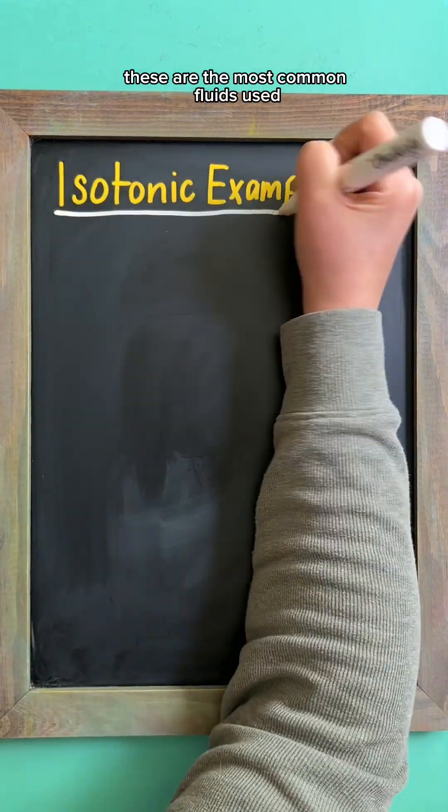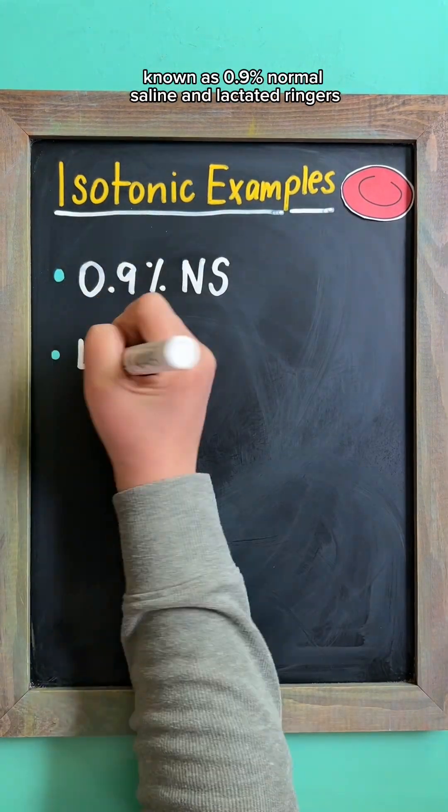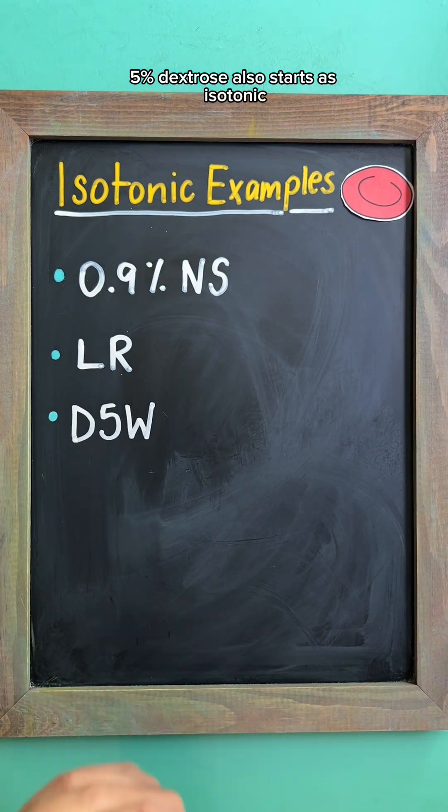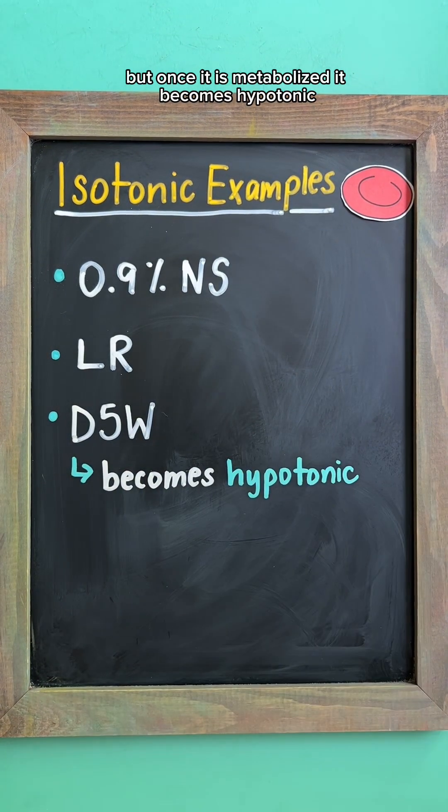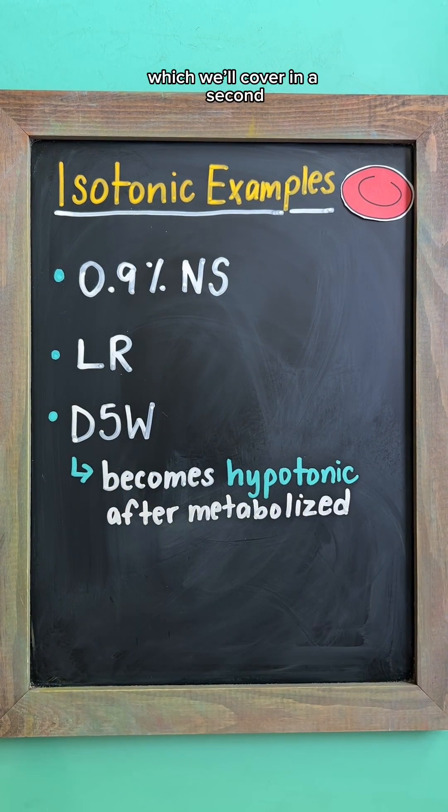These are the most common fluids used, known as 0.9% normal saline and lactated ringers. 5% dextrose also starts as isotonic, but once it is metabolized, it becomes hypotonic, which we'll cover in a second.